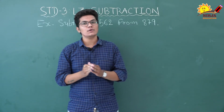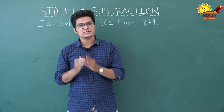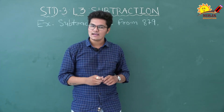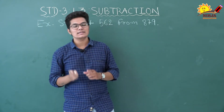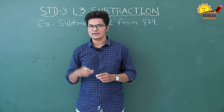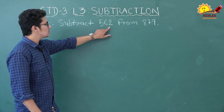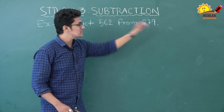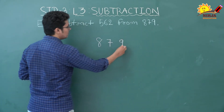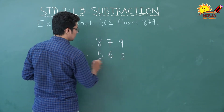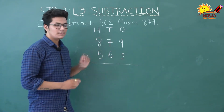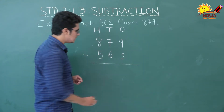If we solve this example, the answer is 2330. It was easy! Now children, you can find out whether your answer of subtraction — your difference — is correct or not. There is a relation between addition and subtraction using which you can verify. Let's do an example: subtract 562 from 879. So we write 879 minus 562.